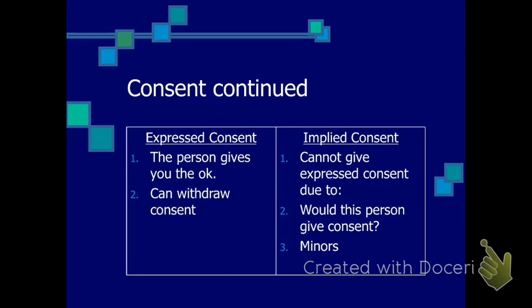There are two different types of consent: express consent and implied consent. Express consent is the most common of the two and represents the idea that the patient can either verbally or through gesture tell you that it is okay for you to treat them. When someone expresses themselves, it represents their ability to verbally tell you or through some type of gesture let you know that it is okay to treat them.